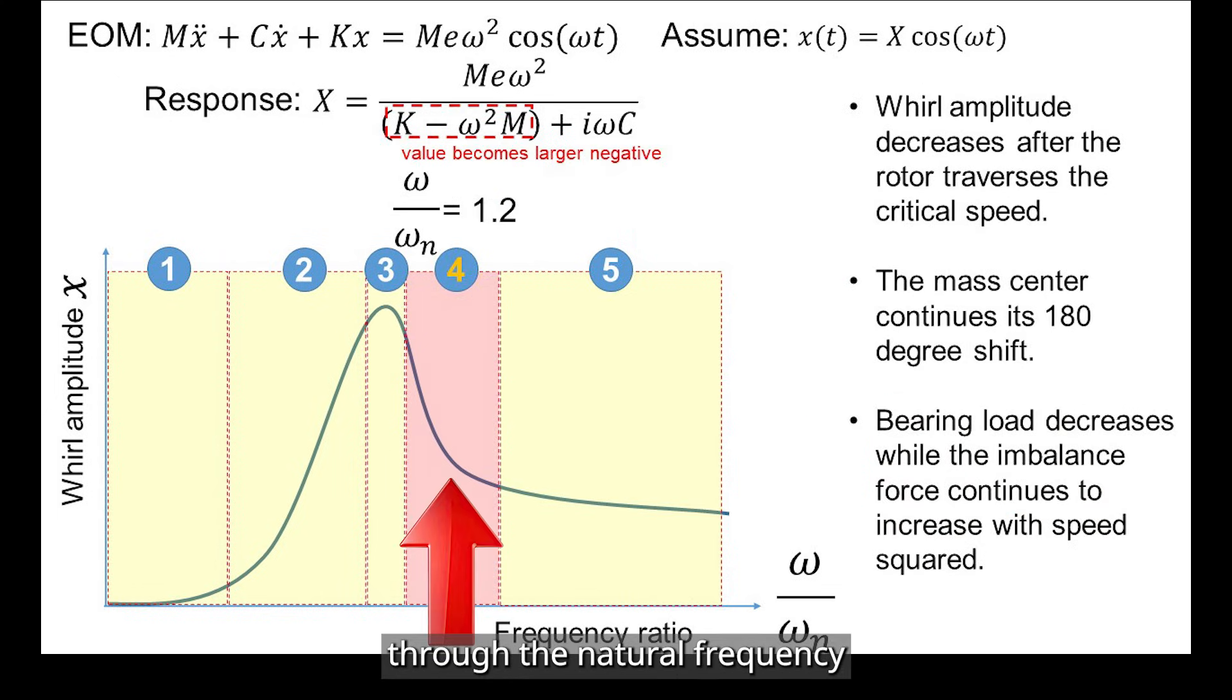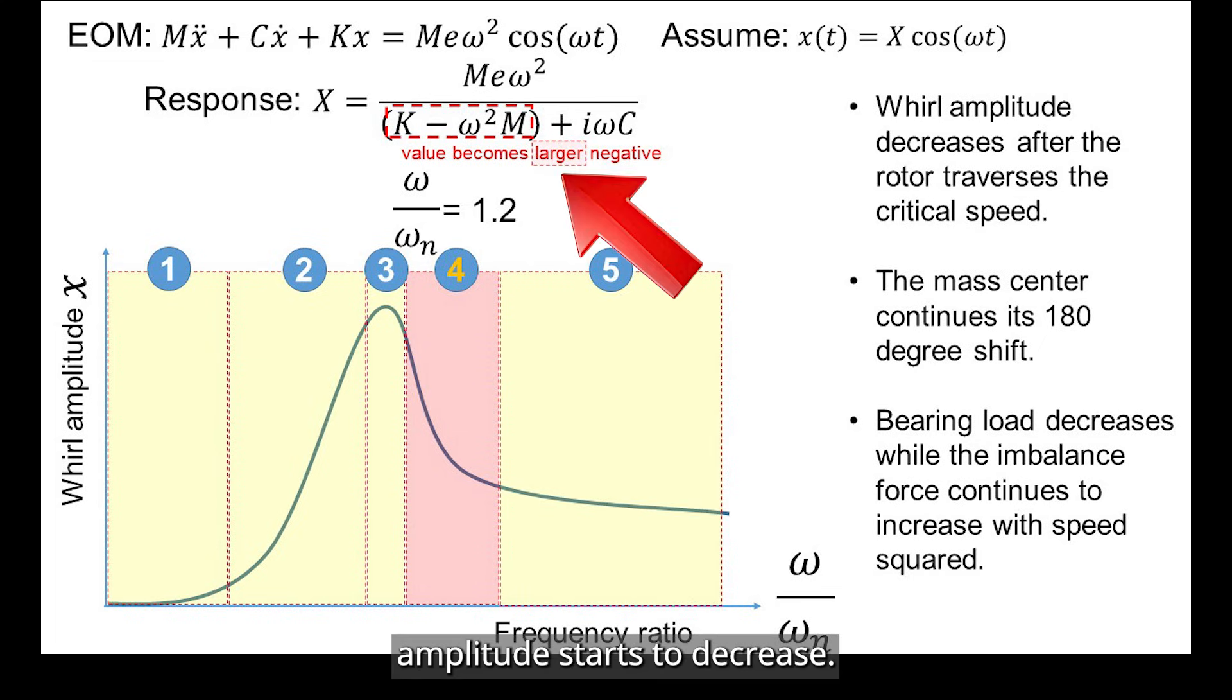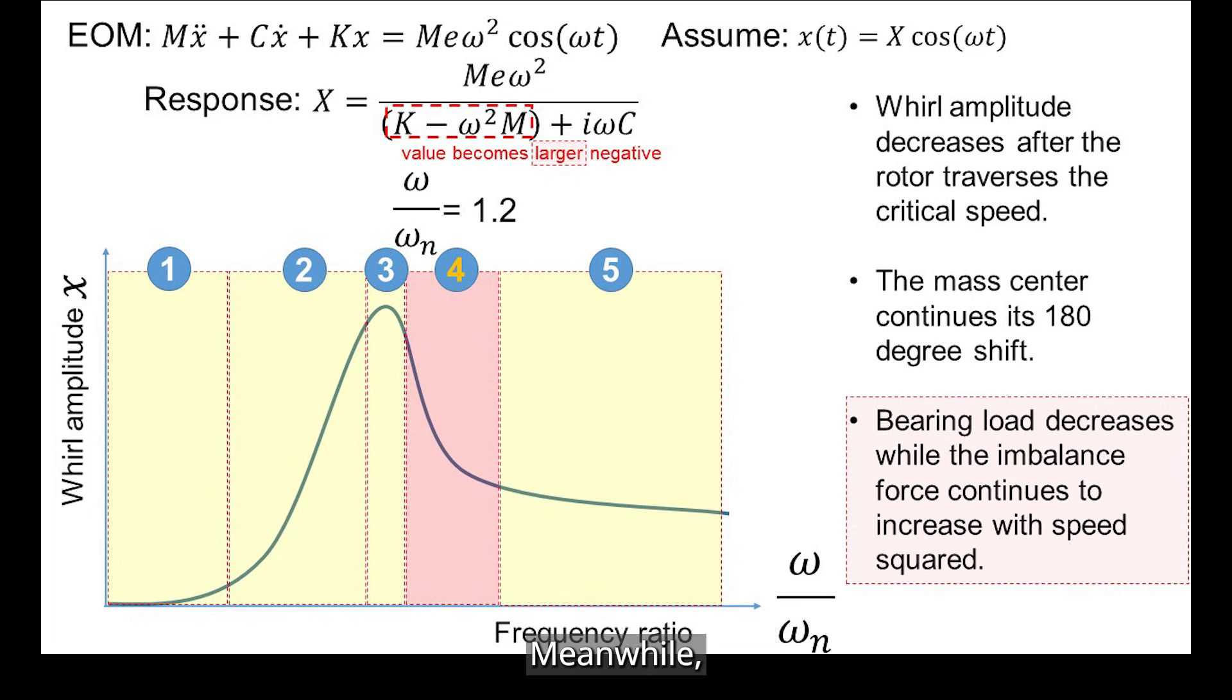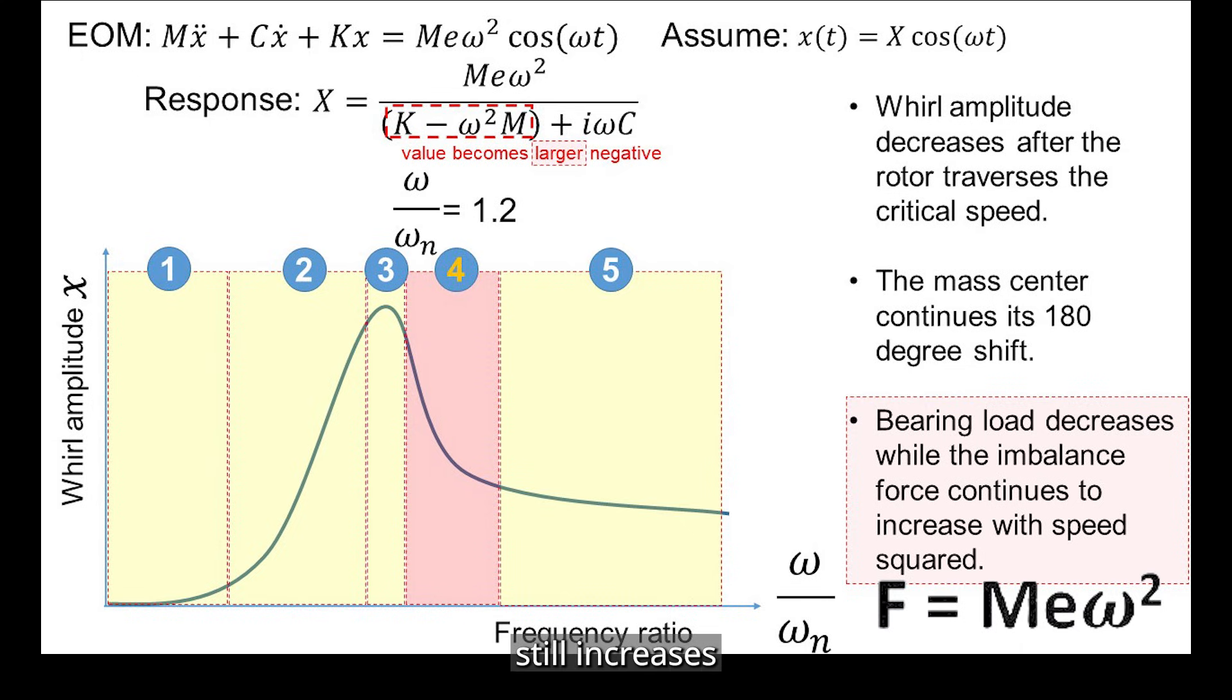Now, the rotor passes through the natural frequency, and the frequency ratio is around 1.2. As speed continues to increase, the vibration amplitude starts to decrease. The rotor begins to orbit around mass center rather than its geometrical center. Meanwhile, although the bearing load decreases, the imbalance force continues to grow with the square of speed. The key takeaway at this speed is that amplitude decreases, bearing load decreases, but the imbalance force still increases because rotor is spinning at higher speed.